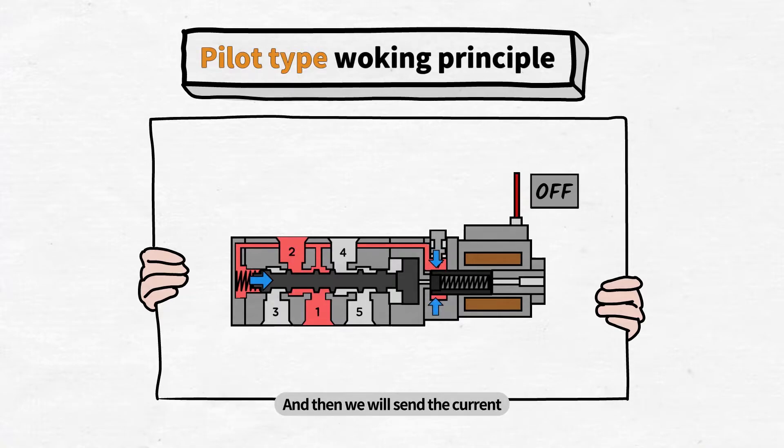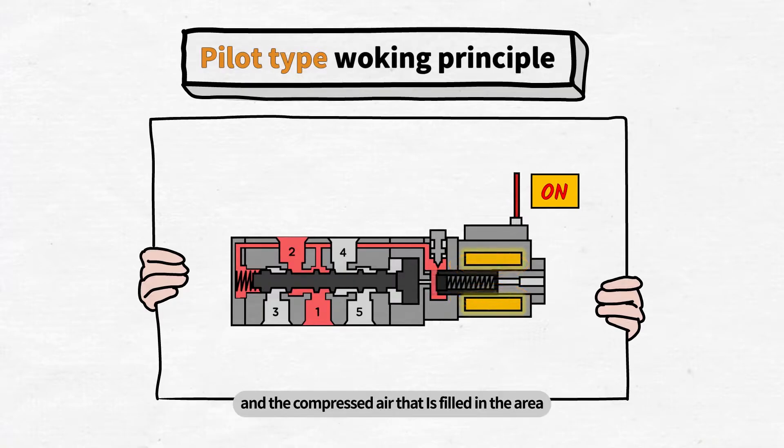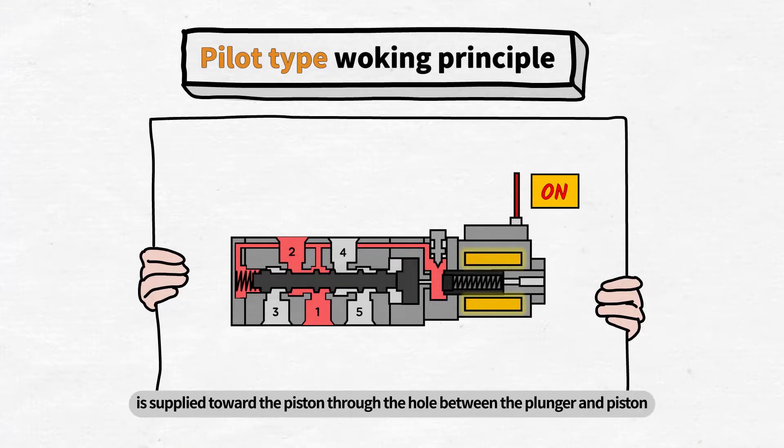And then we will send the current. Once the current begins to flow, the plunger is pulled by magnetic force and the compressed air that is filled in the area is supplied toward the piston through the hole between the plunger and piston. The compressed air then pushes the piston and spool.